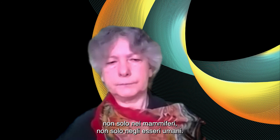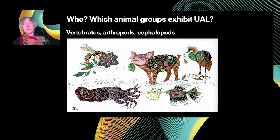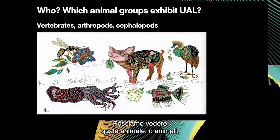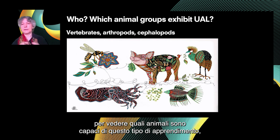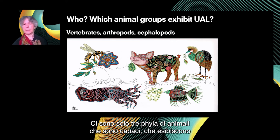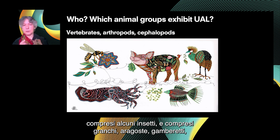We have predictions as to the nature of learning that can happen under subliminal conditions. If unlimited associative learning is really a marker of consciousness, and it is something we can actually study, we can see which creatures can accomplish this kind of learning. We looked for quite a long time and found that it is only animals — and only a very small number of phyla. There are only three phyla capable of unlimited associative learning: the vertebrates, some arthropods including some insects and crustaceans such as crabs, lobsters, and shrimps, and the coleoid cephalopods, which include the squid, the octopus, and the cuttlefish.